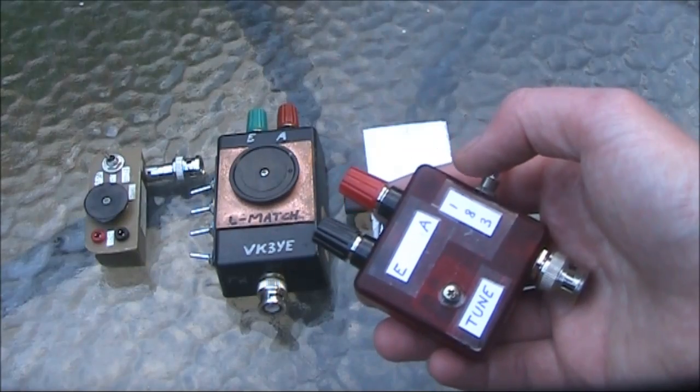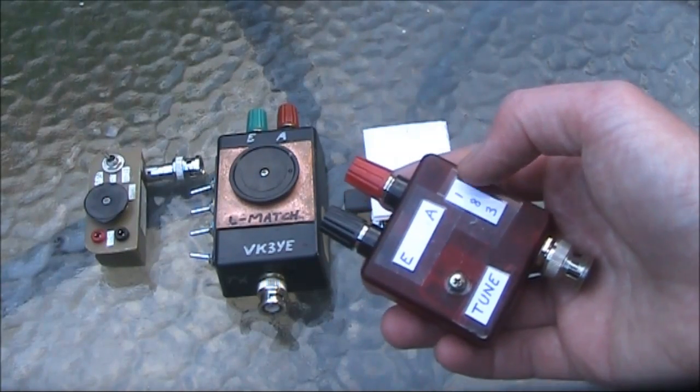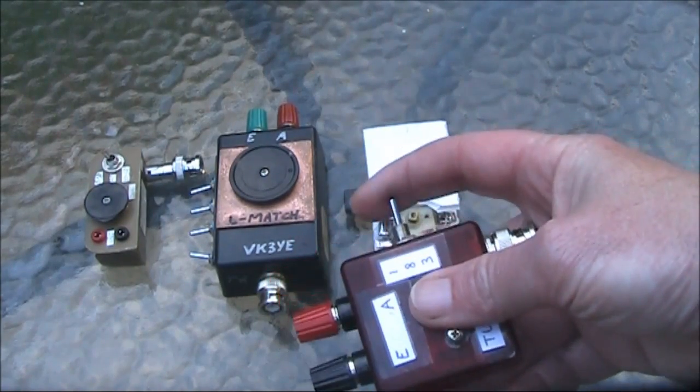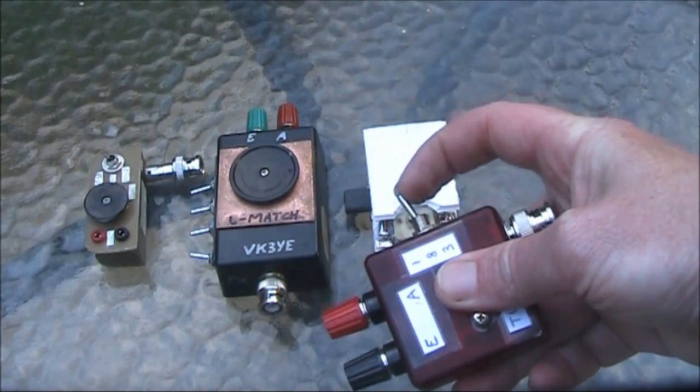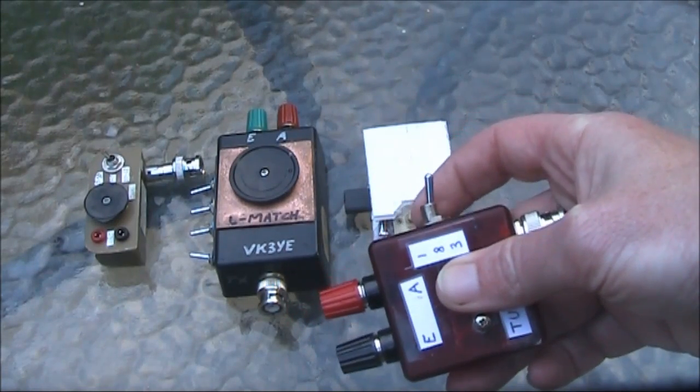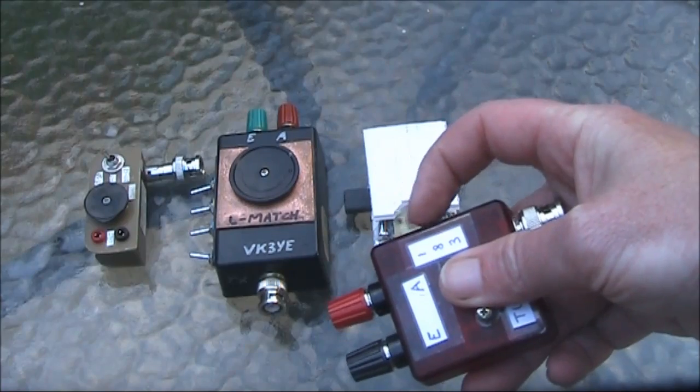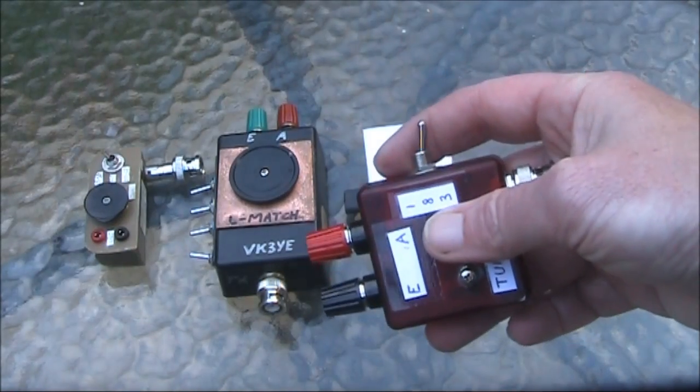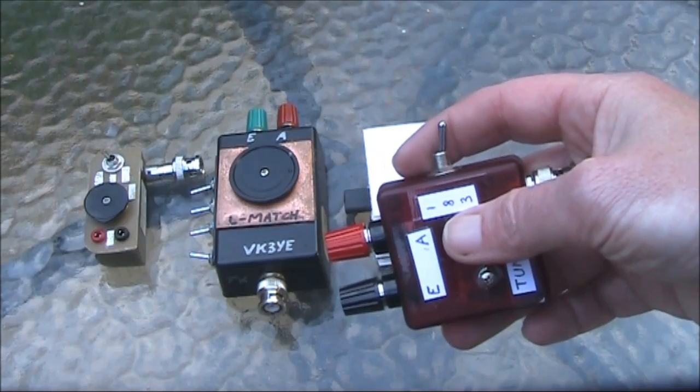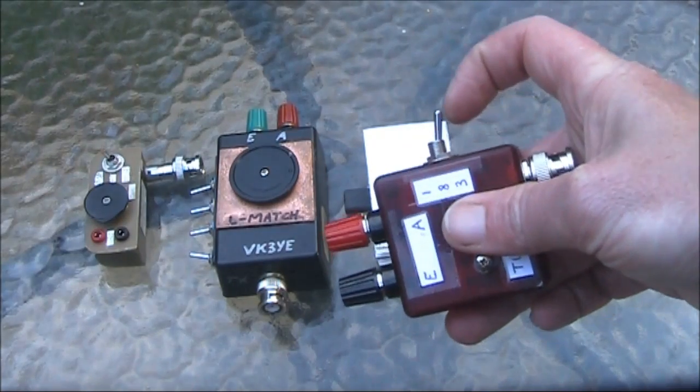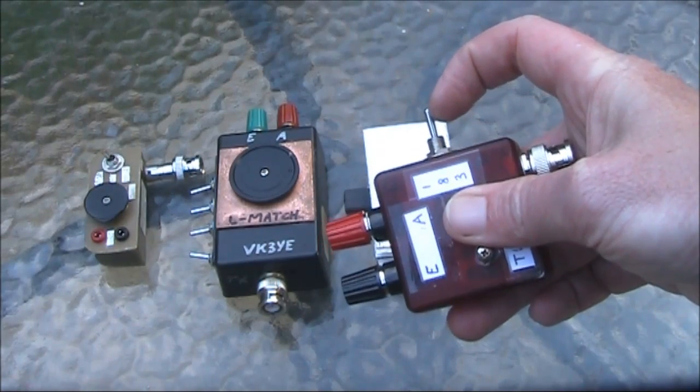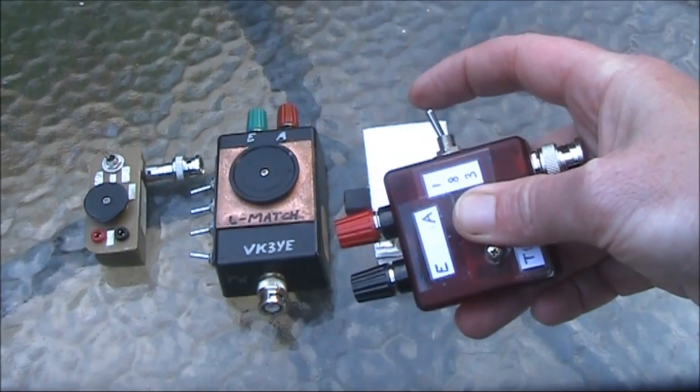Of course, there's still some things I could do to make it even smaller. For instance, instead of the toggle switch, which sticks out all this way, I could use a slide switch, which is lower profile. The main difficulty with that is that unless you get a three position slide switch, you don't have the three inductance ranges, which make this unit so useful.